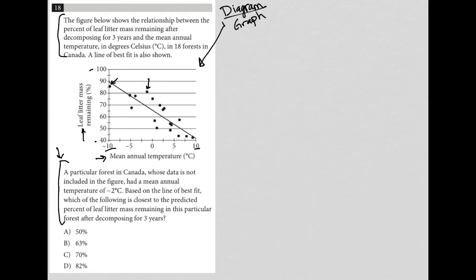The next step here says a particular forest in Canada whose data is not included in the figure - so a 19th forest basically - had a mean annual temperature of negative two degrees Celsius. So let's erase some of these little marks because everything I put on here now is going to be part of actually answering the question.